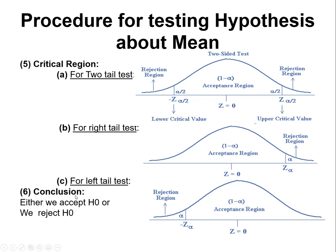The sixth step is the conclusion. We check where our calculated z value lies — in the acceptance region or the rejection region. We can also calculate the p-value. If the p-value is less than the level of significance, we reject H0. If the p-value is greater than the level of significance, we accept H0. I will show you how to calculate these values from the table in a simple example.